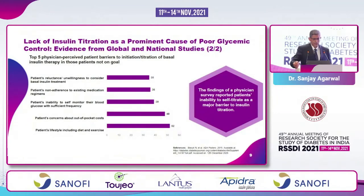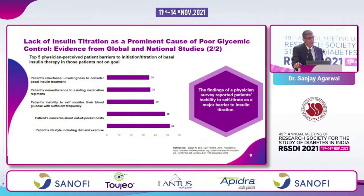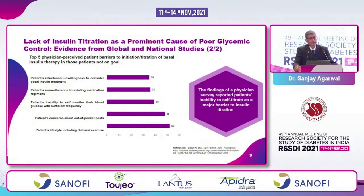A physician survey identified the top barriers to insulin initiation and titration, finding that patients' inability to self-titrate was a major barrier. Although we want to empower patients to self-titrate, we need to train and build their confidence. Studies comparing physician-driven versus patient-driven titration show similar glycemic goal achievement, but patient-driven titration results in less hypoglycemia and lower insulin doses.